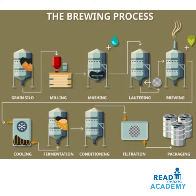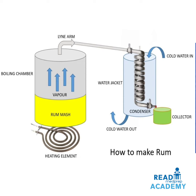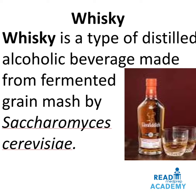The beer brewing process involves: grain silo, milling, mashing of grains, lautering, brewing, cooling, fermentation, conditioning, filtration, packaging, and transport. Rum is made from fermented sugarcane or molasses, or directly from sugarcane juice, by Saccharomyces cerevisiae. The rum distillation process uses a boiling chamber where the sugarcane mash or molasses is heated, vapor passes through the lyne arm, through a condenser in a water jacket which condenses the vapor, and the rum is collected, bottled, and transported.